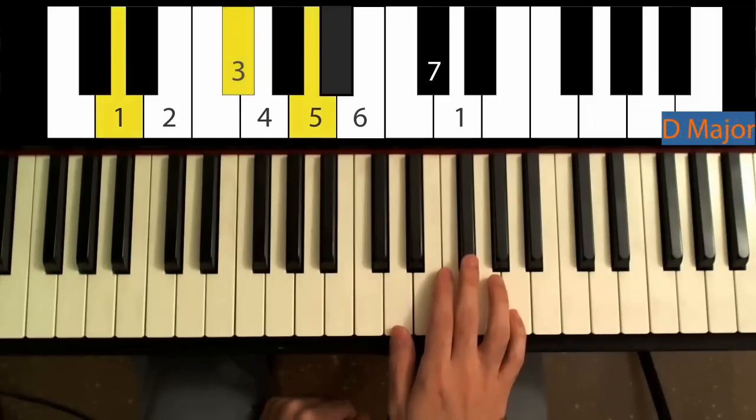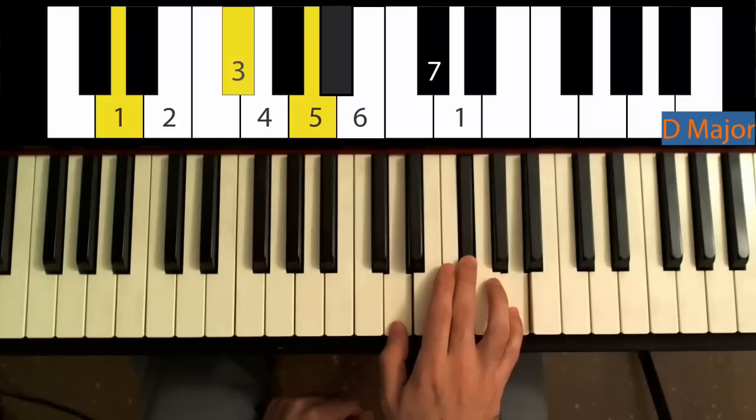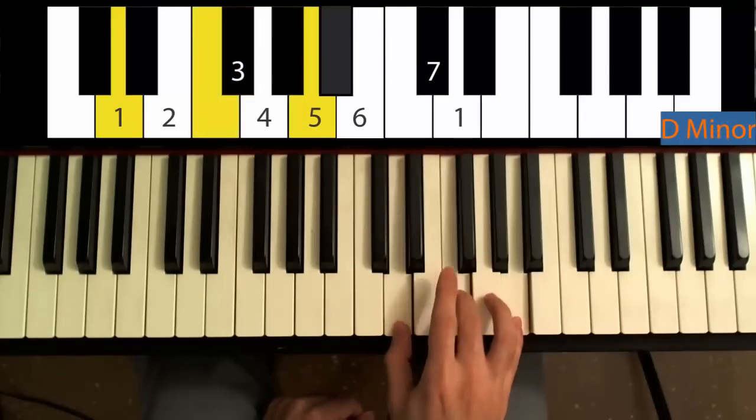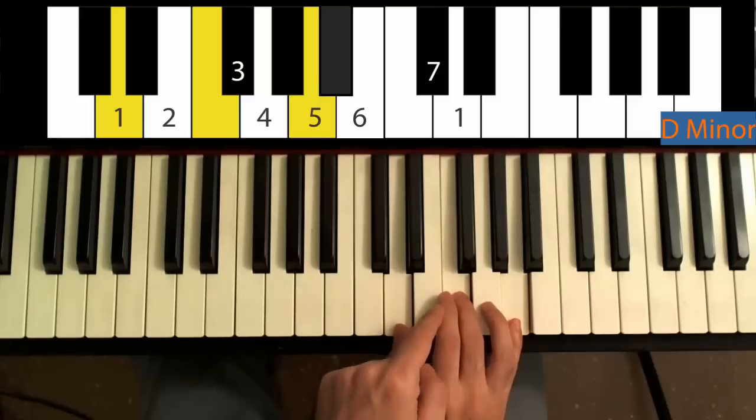The D major triad would be 1, 3, 5. The D minor would be 1, lower 3rd, 5.